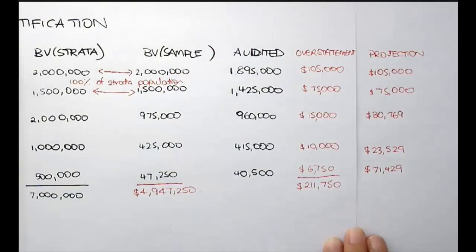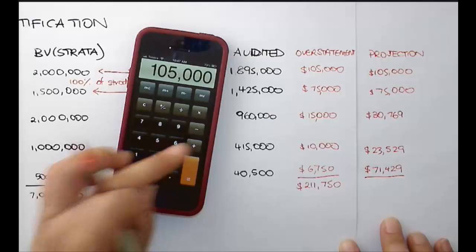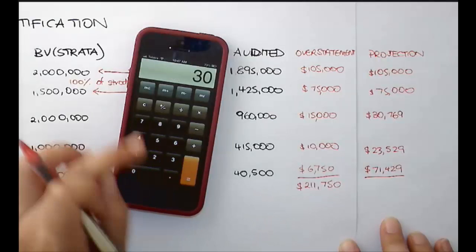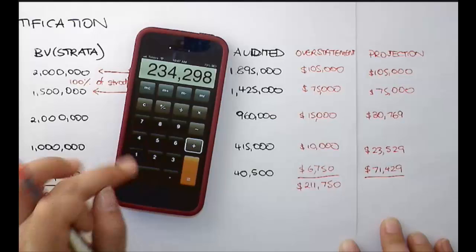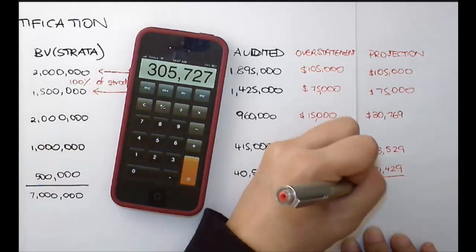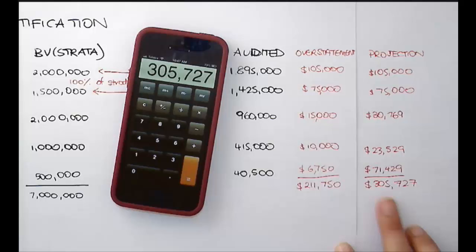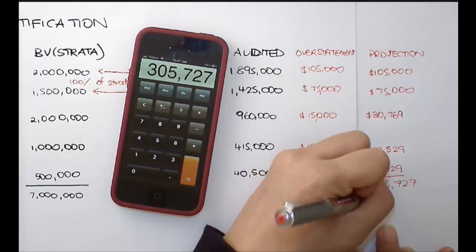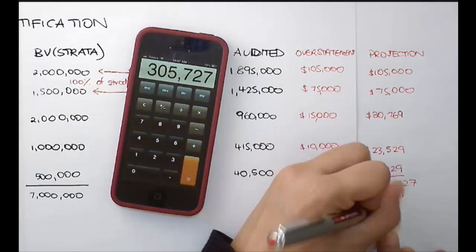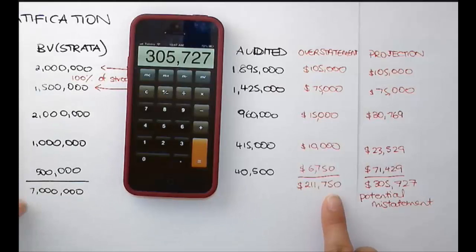So my projected misstatements per stratum are: $105,000; $75,000; $30,769; $23,529; and $71,429 — giving a total projected misstatement of $305,727. We know that $211,750 of that is real because we've actually identified those errors. The remainder is the extrapolated projection to the unstested portions of the population.